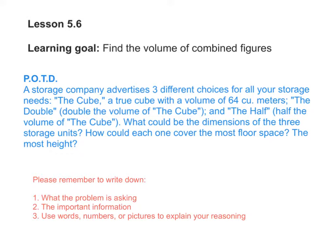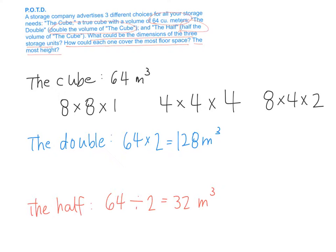Let's first talk about the problem of the day. As we know, we calculate the volume by measuring the length times the width times the height. So as long as your three factors equal 64 when multiplied, the volume and those dimensions work. But the question is asking how could it cover the most floor area? How can we make the area of the base the biggest?